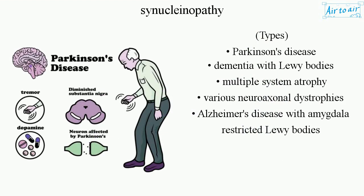Types include Parkinson's disease, dementia with Lewy bodies, multiple system atrophy, various neuroaxonal dystrophies, and Alzheimer's disease with amygdala-restricted Lewy bodies.